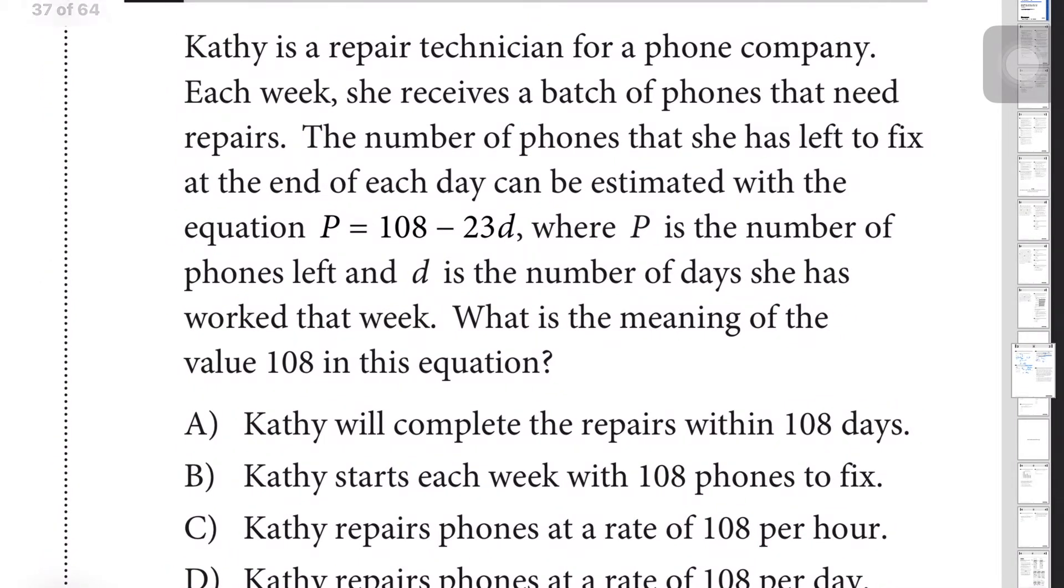Let's go on to question 4. Kathy is a repair technician for a phone company. Each week she receives a batch of phones that need repairs. The number of phones that she has left to fix at the end of each day can be estimated with the equation p = 108 - 23d, where p is the number of phones left and d is the number of days she has worked that week. What is the meaning of the value 108 in this equation? This is pretty much just a conceptual understanding of what's going on in this equation. This is a linear equation, this is your slope which would be the number of phones fixed per day, and 108 would be your starting number for that week. So it would be B: Kathy starts each week with 108 phones to fix.